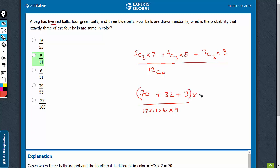So, into 24. 24, 12 and 10 can be cancelled, you get 5. 70 plus 32 is 102 plus 9, that's 111 out of 55 into 9, 495. Divide each by 3, becomes 37 upon 165.